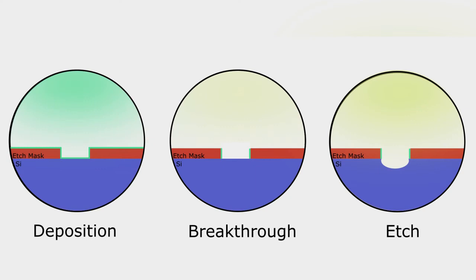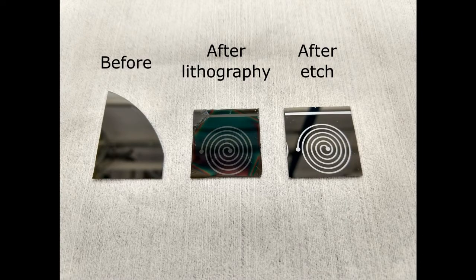We have used this etch to go all the way through a silicon wafer with reasonable uniformity. Here are samples before and after a Bosch etch has been performed.